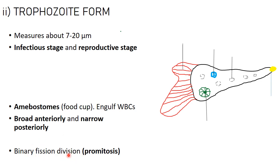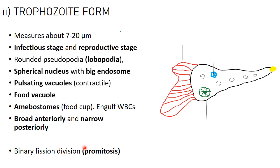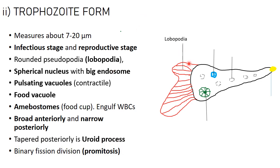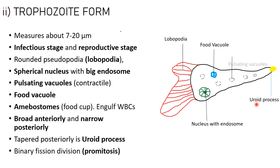At the posterior end it tapers to a structure known as a uroid process, which aids in locomotion. The trophozoite divides via binary fission through a process known as promitosis, which is a sub-form of mitosis that is unregulated. It also contains lobopodia formed by the ectoplasm, food vacuoles, a nucleus with a centrally located endosome, and pulsating vacuoles that aid in regulating osmotic pressure by contracting.